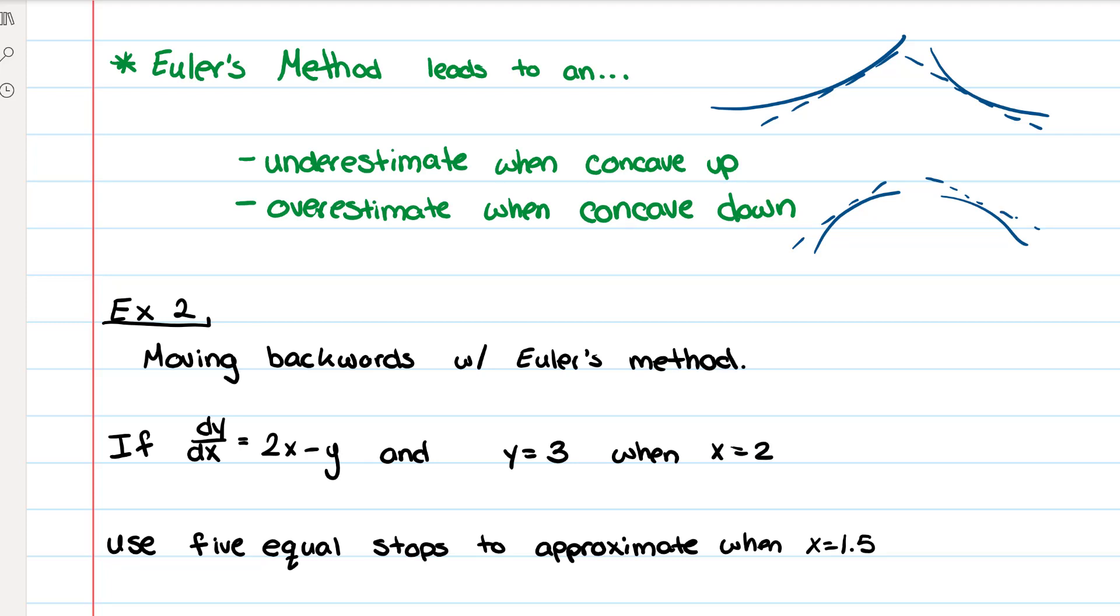So just keep in mind that when using Euler's method, you are using the tangent lines, so concavity takes place in determining whether it's going to be an overestimate or an underestimate.